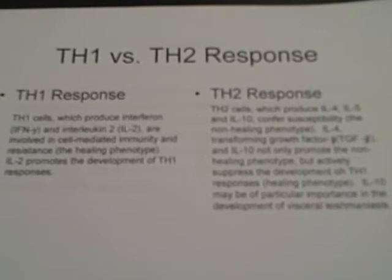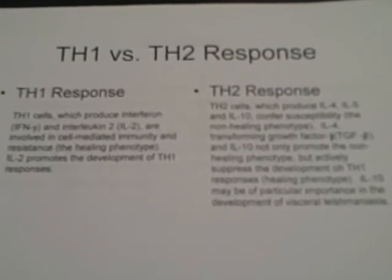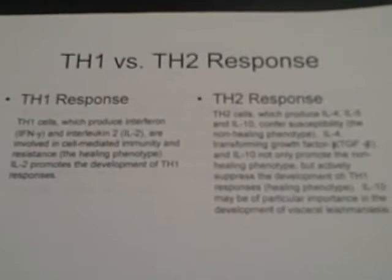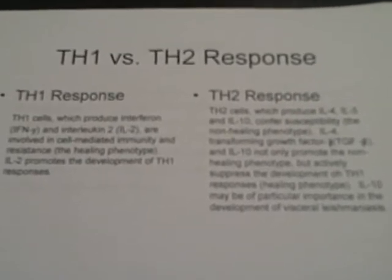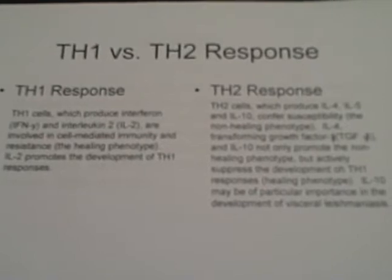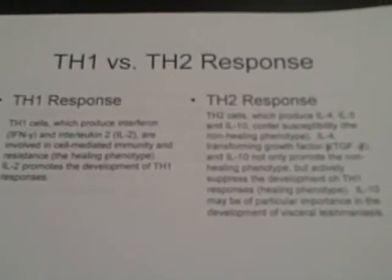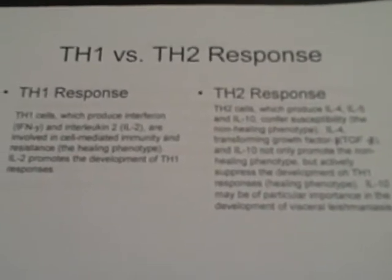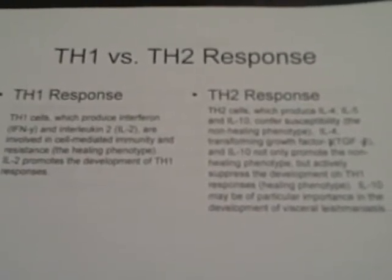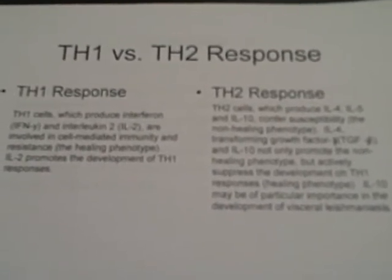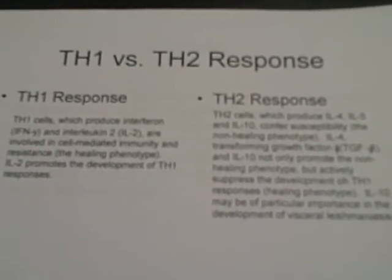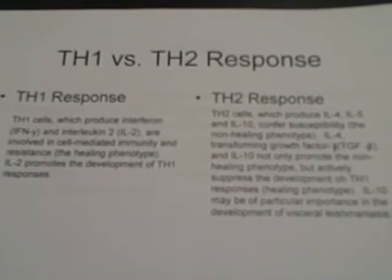Th2 cells, which produce interleukin-4, interleukin-5, and interleukin-10, confer susceptibility, known as the non-healing phenotype. Interleukin-4, transforming growth factor beta, and interleukin-10 not only promote the non-healing phenotype, but actively suppress the development of Th1 responses, the healing phenotype. Interleukin-10 may be of particular importance in the development of visceral leishmaniasis.